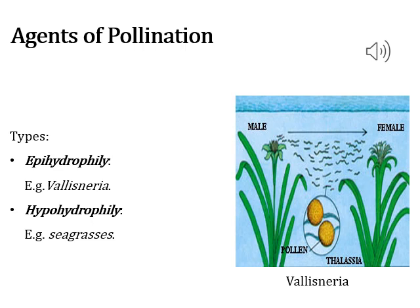Looking at this picture of Vallisneria and seagrass plants, you can see how the male and female plants undergo pollination and how they are involved in a water source.